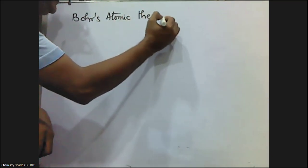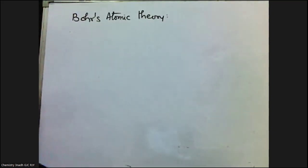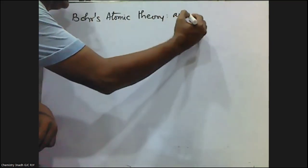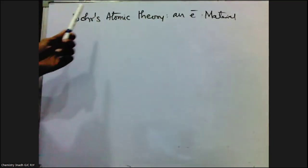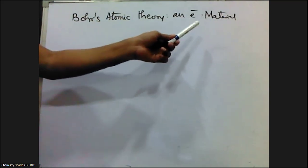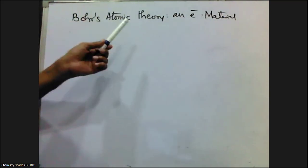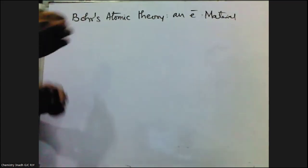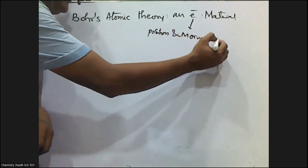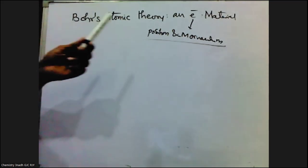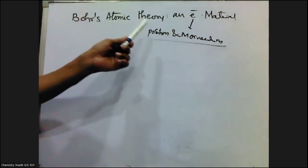We know that Bohr's atomic theory considers an electron as a material particle. So if it is considered as only a material particle, its position and momentum can be determined accurately and simultaneously.